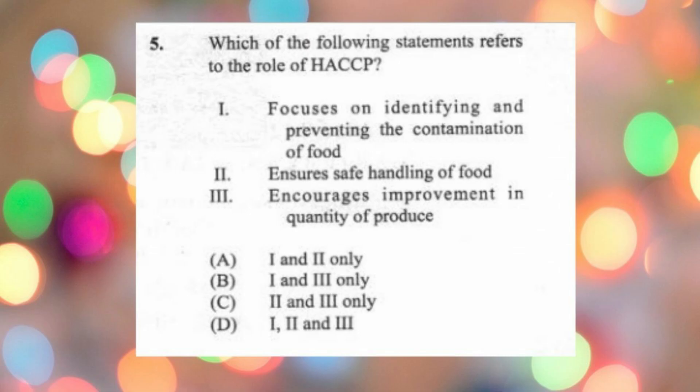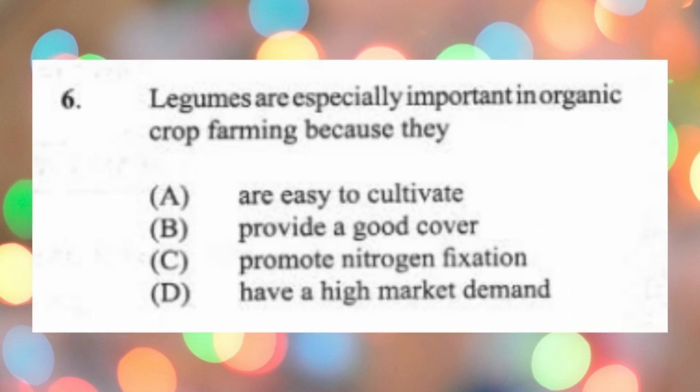Question 5: Which of the following statements refers to the role of HACCP? (1) focuses on identifying and preventing contamination of food, (2) ensures safe handling of food, (3) encourages improvement in the quantity of produce. The answer is A, one and two only. HACCP is a set of policies carried out in the manufacturing process to ensure consumers receive safe food. GAP would ensure improvement in quantity of produce, but HACCP focuses on safety and hazard analysis of food.